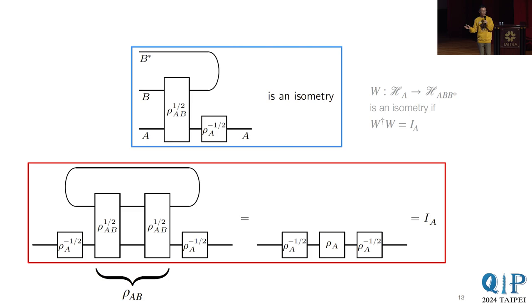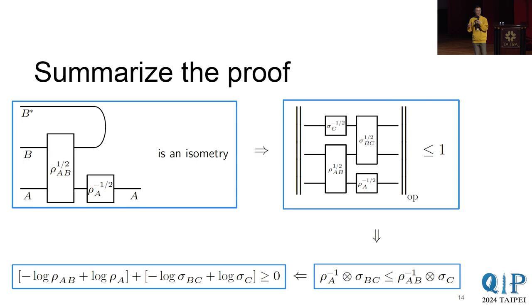And it's also simple to check, because all you need to do is to take its Hermitian conjugate and then contract the two. And you can see that the middle becomes rho AB. After taking the trace, you get rho A. And so the whole thing is just identity, which is exactly the definition for it to be an isometry. And that's the whole proof.